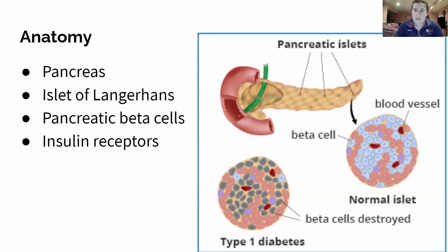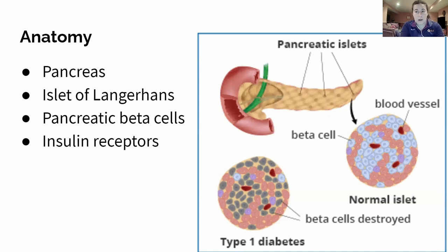What happens is there are these beta cells in the pancreas, and they are being destroyed. So essentially the body is no longer producing its own insulin and is now going to require either insulin injections or some sort of exogenous insulin in order to continue to function properly.